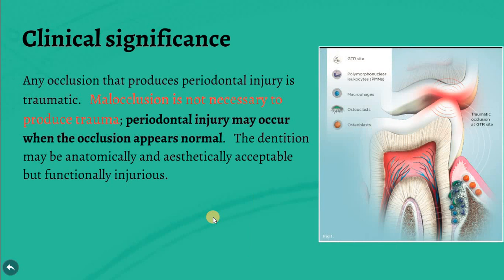Any occlusion that produces periodontal injury is considered traumatic. Malocclusion is not necessary to produce trauma — it's not the matter of the position of the teeth, but the matter of high impact, wrong direction, or continuous/multiple intermittent applications of forces. Periodontal injury may occur when the occlusion appears normal; the dentition may be anatomically and aesthetically acceptable but functionally injurious.